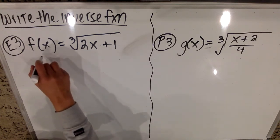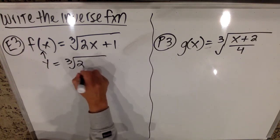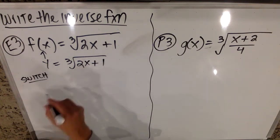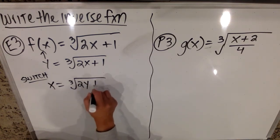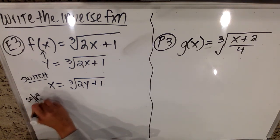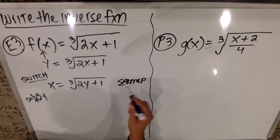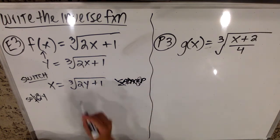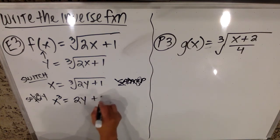So let's move forward. Remember, the first thing we want to do is recognize that this is Y. So it's Y equals the cube root of 2X plus 1. And then in order to find the inverse, you're going to switch. So X equals the cube root of 2Y plus 1. And then you're going to solve for Y using SADMEP. So I'm going to do subtraction and addition first — there isn't any. There isn't any division and multiplication, but there is an exponent, so I'm going to deal with that exponent by cubing both sides. So X cubed equals 2Y plus 1.